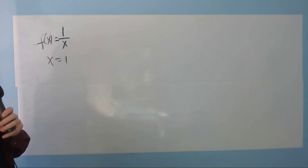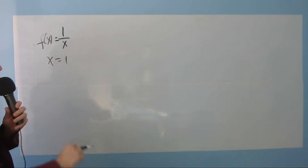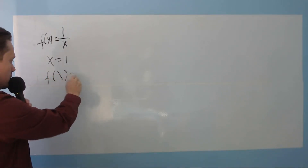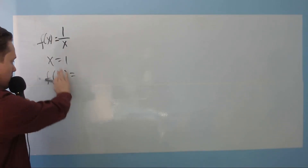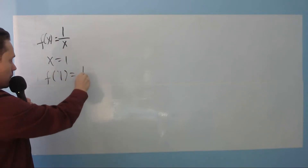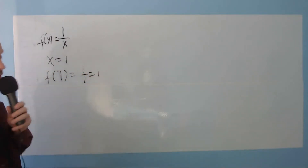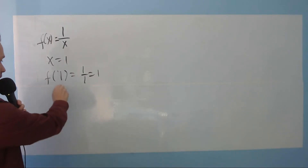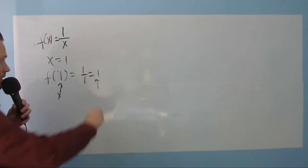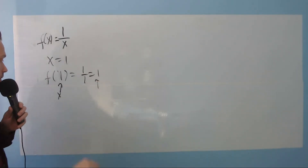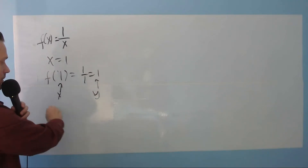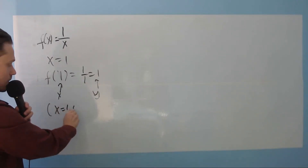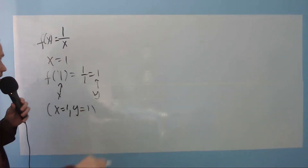Let's evaluate the function at x equals 1. f of 1 equals 1 over 1, which is just 1. This tells us the value of x and the output is the value of y. You group these together into a point: x equals 1 and y equals 1. That's our point.